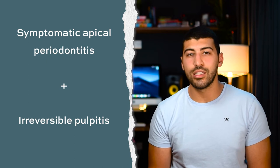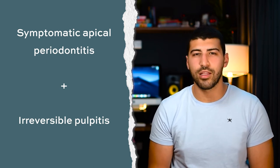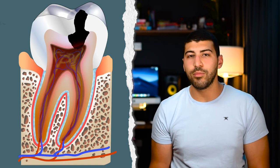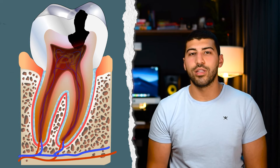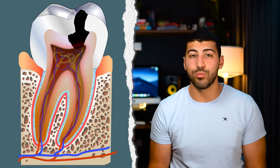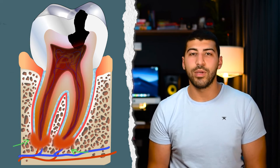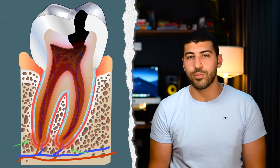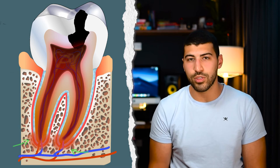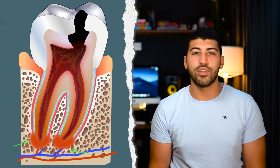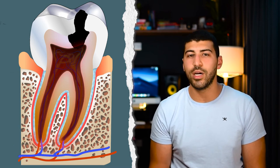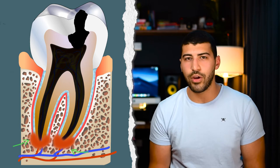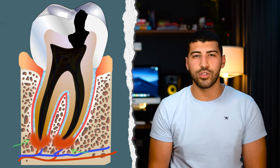One disease leads to another and some diseases also happen at the same time. So as the pulp is inflamed, a person might experience symptoms of irreversible pulpitis, and now that the PDL is also inflamed they may also experience periapical symptoms. But if left untreated, the pulp might die and they might only experience periapical symptoms.